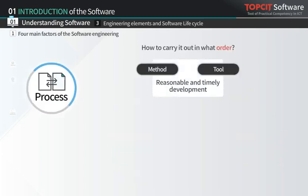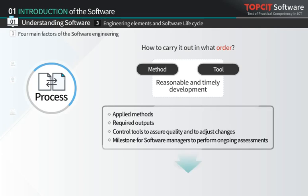Process is related to the procedure regarding in what order work is carried out. The procedure combines method and tool to develop software in a reasonable and timely manner. In other words, it defines the sequences of applied methods, required results, quality assurance, and change control, as well as milestones for software managers to check progress.